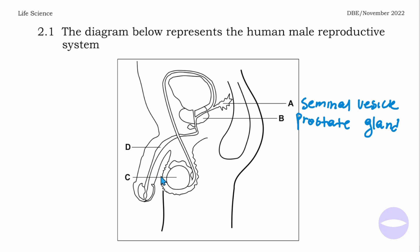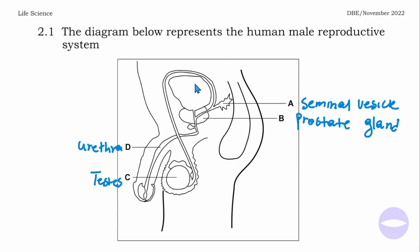Number C is the testis — you can see the scrotum, and inside the scrotum is the testis. Number D is the tube that transports semen or urine, which we call the urethra. Please don't confuse urethra and ureter — the one inside the penis is the urethra, while the ureter delivers urine from the kidney to the urinary bladder.